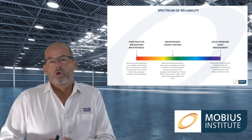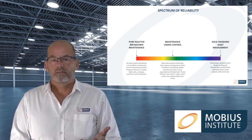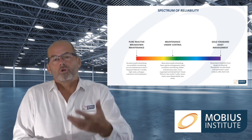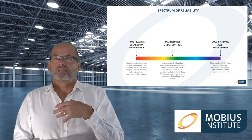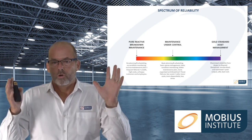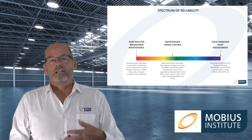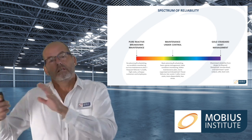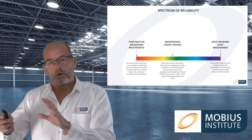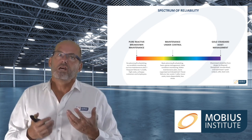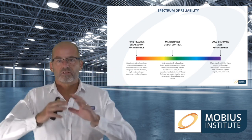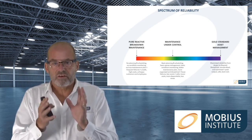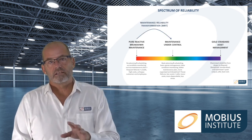Somewhere in between is a point where maintenance is under control — not gold standard, but not constantly suffering. When failures occur we see them coming with condition monitoring, so we can plan and schedule the work. The work we're doing is of a higher standard so we waste less time, we're more focused, and we eliminate most of the reasons why failures occur. Getting to this point is what MRT is for — it helps you get the basics right.